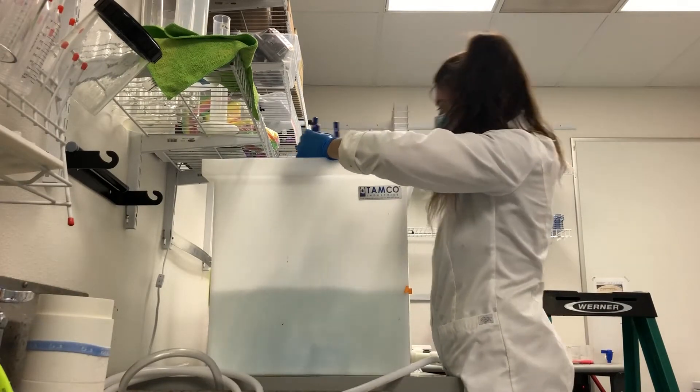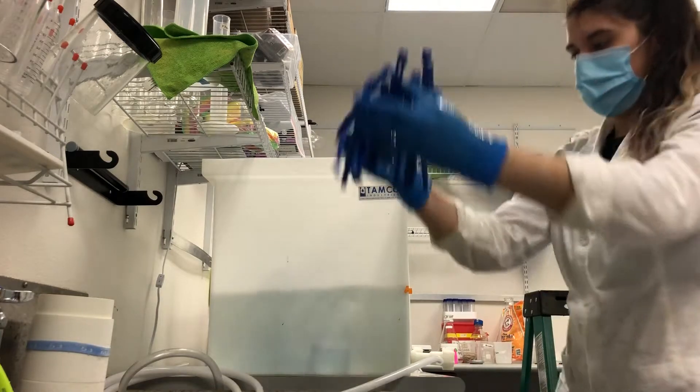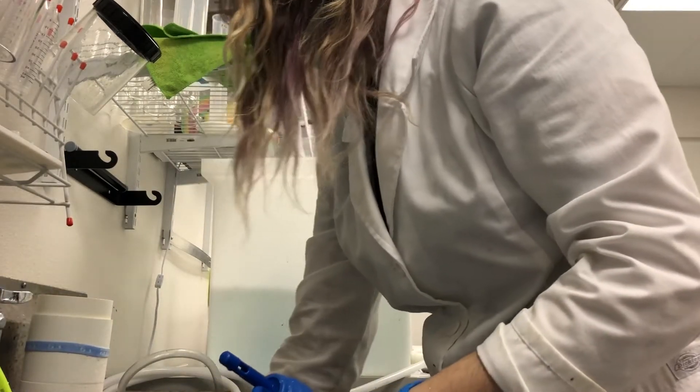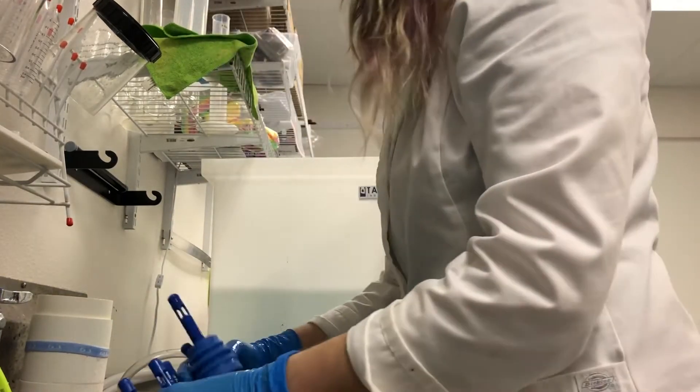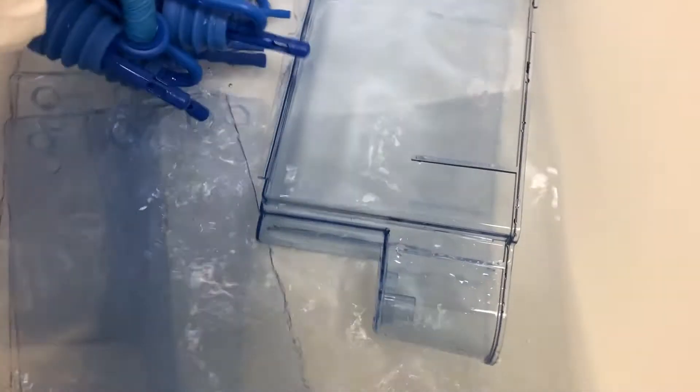After the bleaching period is done we'll remove the dishes and rinse them under tap water. The bleach is very harmful to fish so to make sure any leftover bleach is inert we place the dishes into a sodium thiosulfate bath for a few moments.